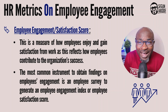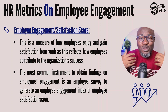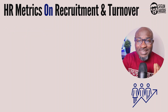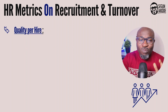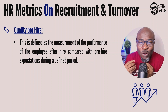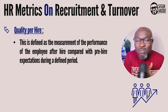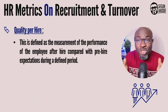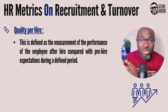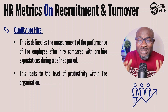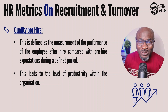HR metrics on recruitment and turnover. Fourth, quality per hire. This is defined as the measurement of the performance of the employee after hire compared with pre-hire expectations during a given period. When you compare what you expected the employee to do when they resume versus what they actually do, that speaks to the quality of the hiring process itself — and by extension, to the level of productivity and efficiency within the organization.